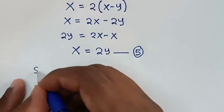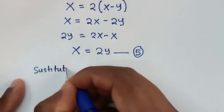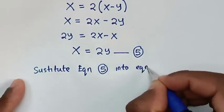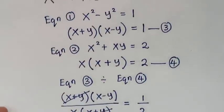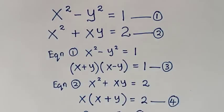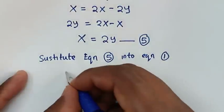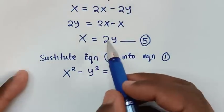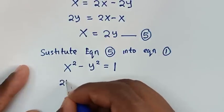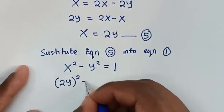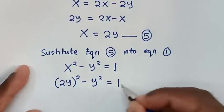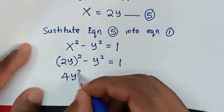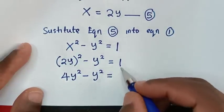Then in the next step, we substitute equation 5 into equation 1. Equation 1 is x squared minus y squared equal to 1. Substituting x = 2y, we get (2y) squared minus y squared equal to 1, which gives 4y squared minus y squared equal to 1.